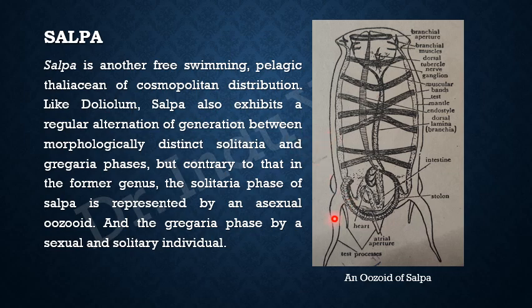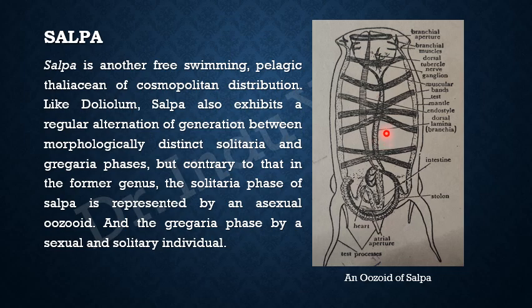Now the structure of Salpa is described in the other slide; a diagram is present here. On the top you can see the branchial aperture, which is guarded by the branchial muscles, and this is the dorsal tubercle. The side we are seeing is the dorsal side of the animal. Because this is the dorsal side, the dorsal lamina will be present in the middle of this surface. This dorsal lamina is also known as branchia in this animal. On the ventral side is seen the endostyle.